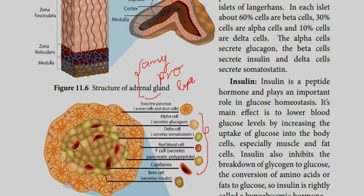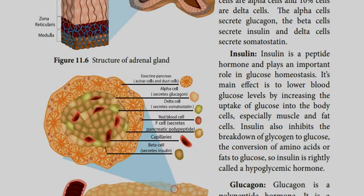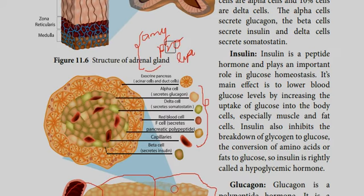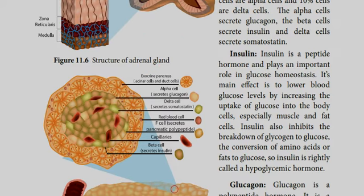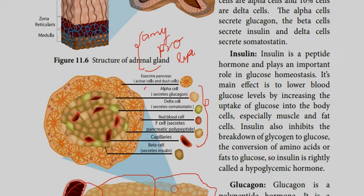The islets of Langerhans contain alpha cells, beta cells, and delta cells. Delta cells make up 10%, beta cells 60%, and alpha cells the remaining portion. Beta cells secrete insulin, alpha cells secrete glucagon, and delta cells secrete somatostatin.